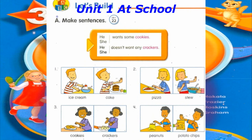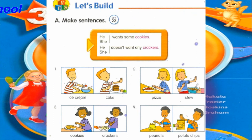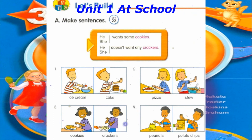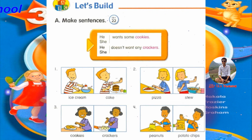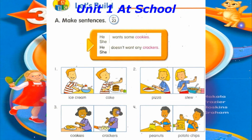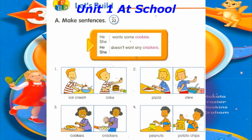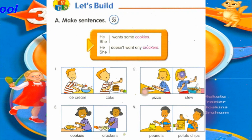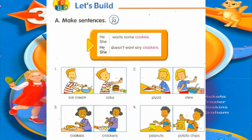Track 22. Let's build. A. Make sentences. He wants some cookies. She doesn't want any crackers. Number 1: He wants some ice cream. He doesn't want any cake. Number 2: She wants some pizza. She doesn't want any stew. Number 3: She wants some cookies. She doesn't want any crackers. Number 4: He wants some peanuts. He doesn't want any potato chips.